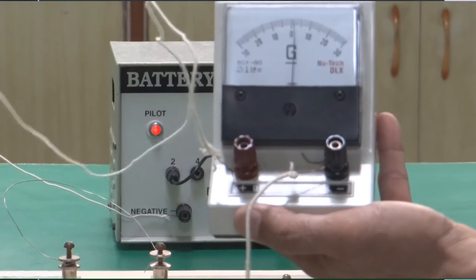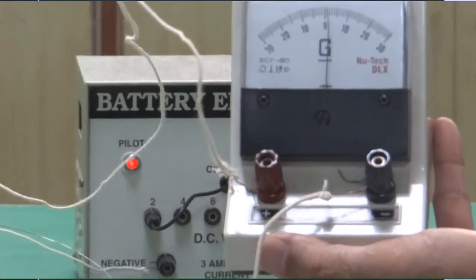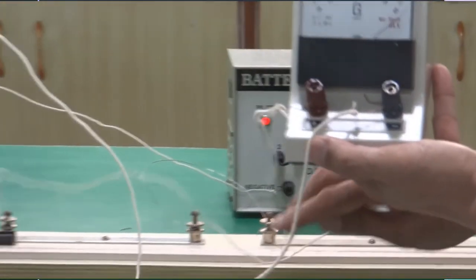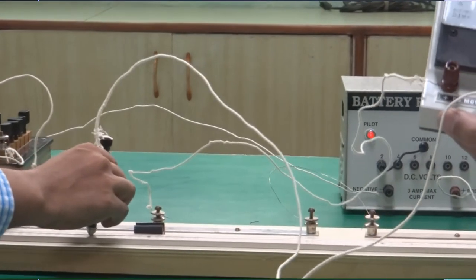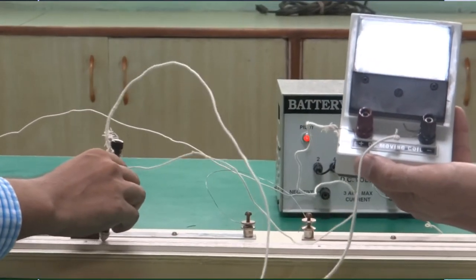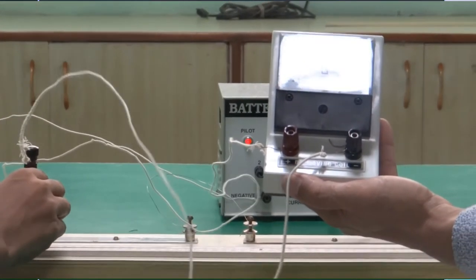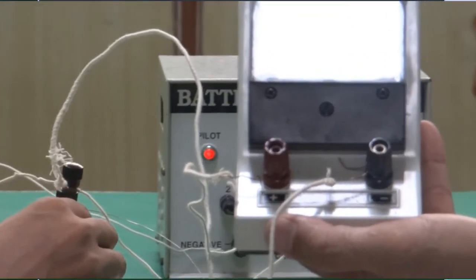One important precaution is, you have to place the jockey gently over this. Because if you press it hard, the wire will get spoiled. Its cross section can get wavy. So let's try to find out where is the null point.